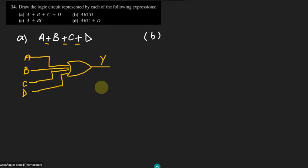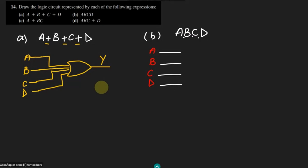Similarly, for part b we have a, b, c, and d, and the operation performed among them is the AND operation. Again we have four inputs. We have a, b, c, and d, and these are given to a logic circuit called the AND gate — all four inputs are given to this one.